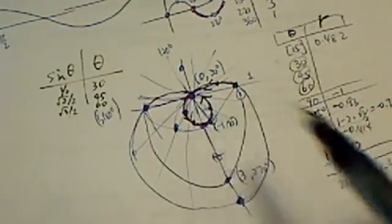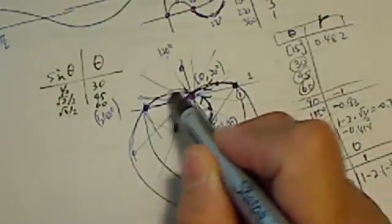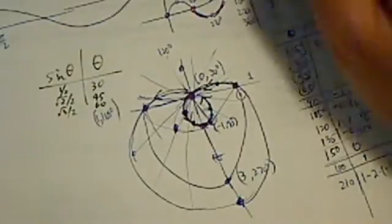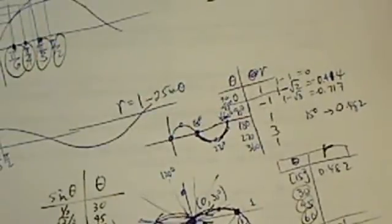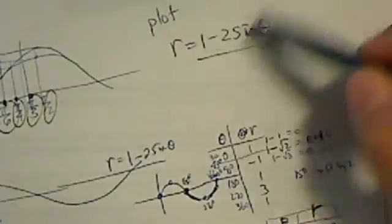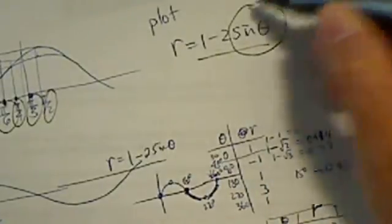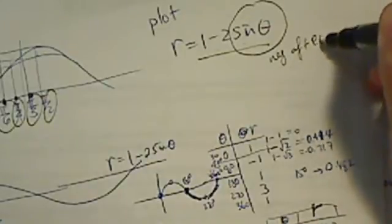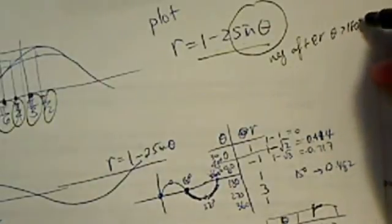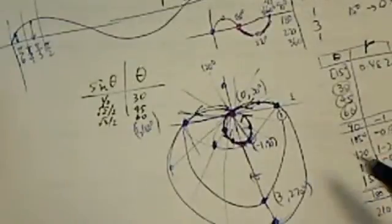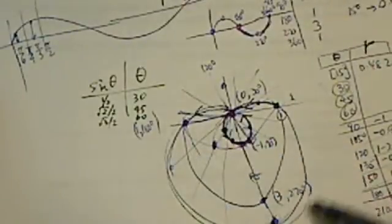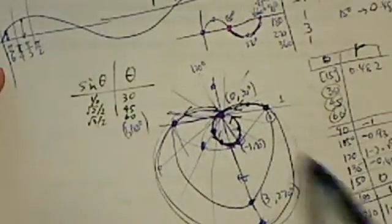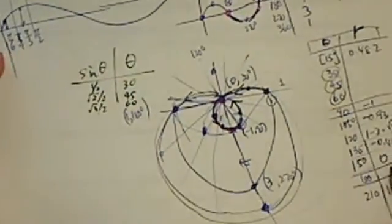The circle goes out this way, and then as theta passes through 180 degrees, after 180 degrees, this one becomes a negative number. After theta becomes bigger than 180 degrees, thus expanding the circle, actually expanding it, thus look like a snail. This one is a pretty rudimentary plot.